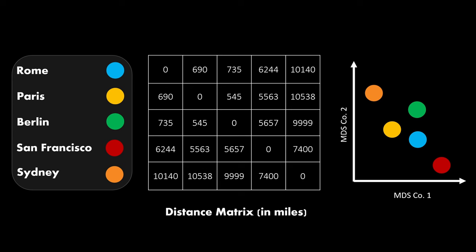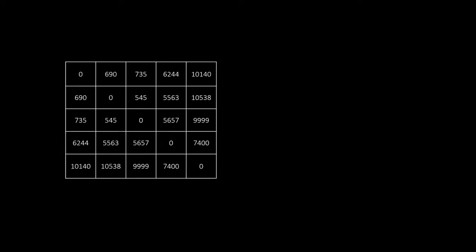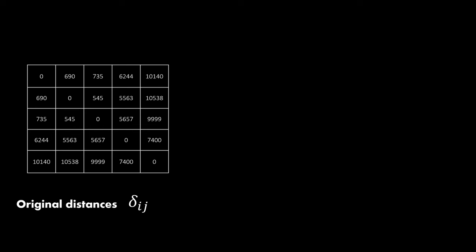Finding such a map means that we need to find a set of vectors in a p-dimensional space. For the orange point, we would for example look for these coordinates. The challenging part is that we need to maintain the distance to all other points according to our distance matrix. And that's exactly what's meant by scaling the distances in MDS.